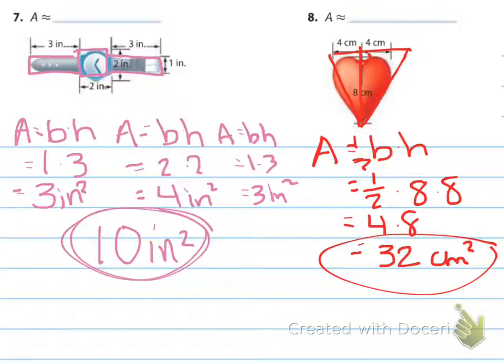And then the heart, I change it into a complete triangle and use the height as the 8 centimeters and the base as the 8 centimeters, which is right here. I've got 32 centimeters squared.